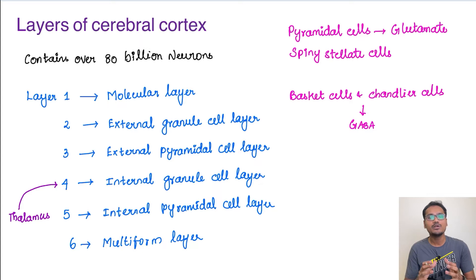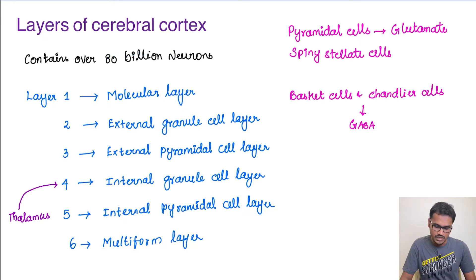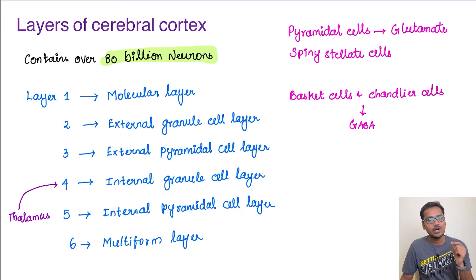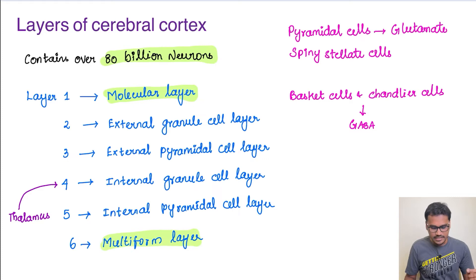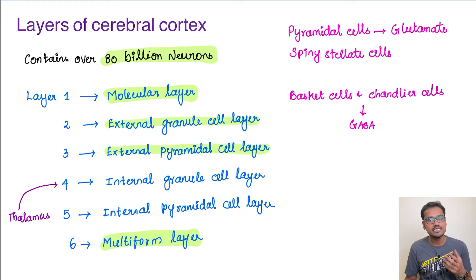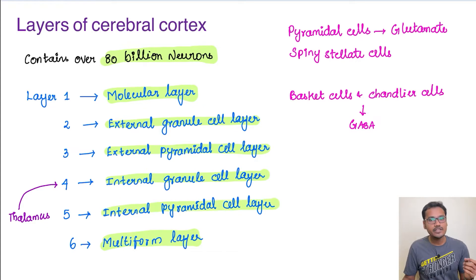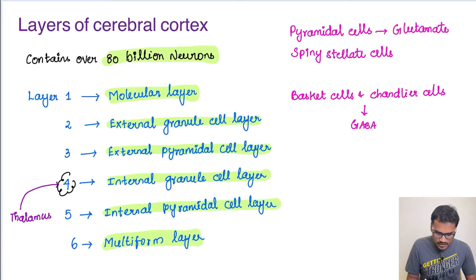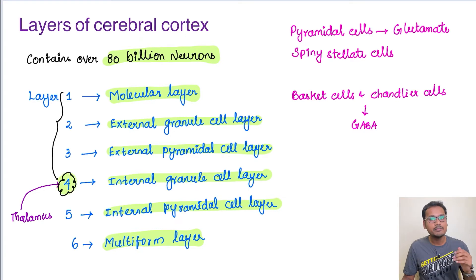The cerebral cortex is one of the most complex regions in the brain, with about 80 billion neurons. It has six different layers. The first layer is the molecular layer and the last is the multiform layer. The second is the external granule cell layer, the third is the external pyramidal cell layer, then the internal granule cell layer and internal pyramidal cell layer. Sensory impulses pass through the thalamus and reach layer four, while non-specific stimuli from the thalamus reach all the first four layers.